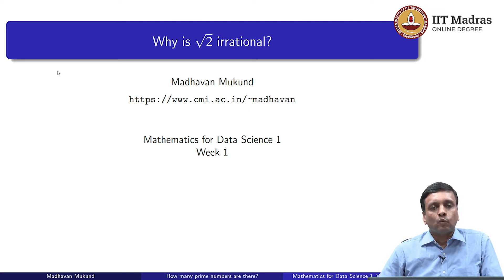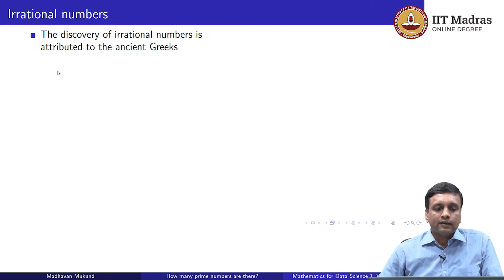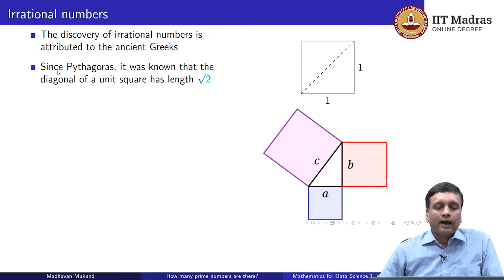Let us try and ask why square root of 2 is an irrational number. The discovery of irrational numbers is actually attributed to the ancient Greeks, and in particular it comes from Pythagoras.